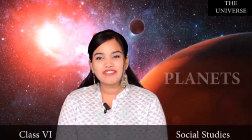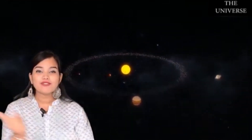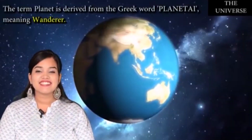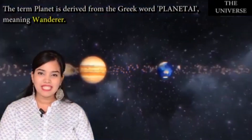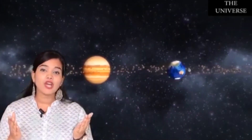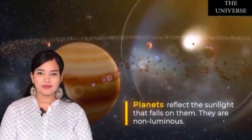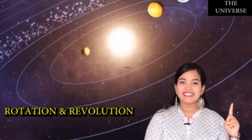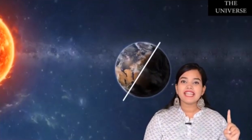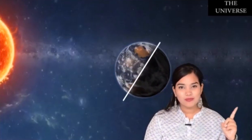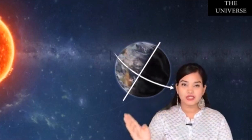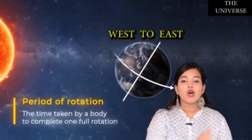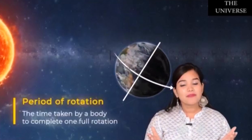In today's session I'll give you a brief introduction about planets. A planet is a celestial body that moves around the Sun. The term 'planet' is derived from the Greek word 'planetai', meaning wanderer. Planets don't have their own light — they only reflect the sunlight that falls on them, hence they are non-luminous objects. Planets have two types of movement: rotation and revolution. Each planet has its own axis on which it rotates or spins. All planets rotate in an anti-clockwise direction (from west to east), except for Venus and Uranus. This is known as the period of rotation.